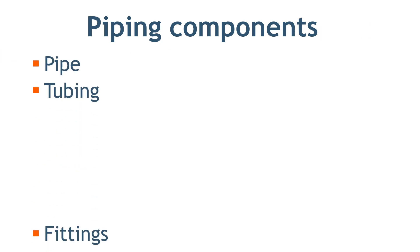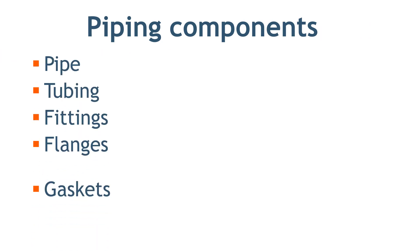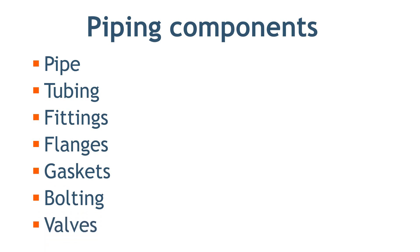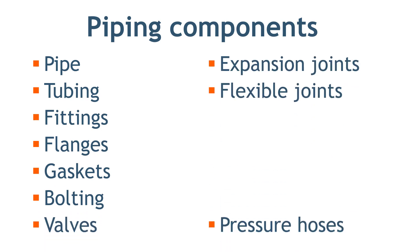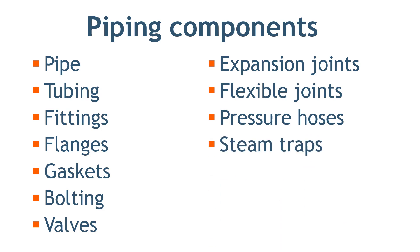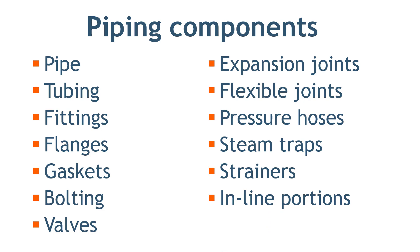Pipe components are mechanical elements suitable for joining or assembly into pressure-tight, fluid-containing piping systems. These pipe components include: pipe, tubing, fittings, flanges, gaskets, bolting, valves, and devices such as expansion joints, flexible joints, pressure hose, steam traps, strainers, inline portions of instruments, and separators. All these components serve different functions so that the piping system serves a useful purpose. In short, anything used within the piping system is a pipe component.